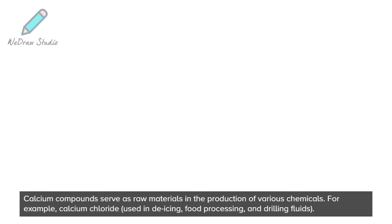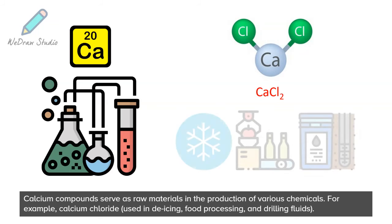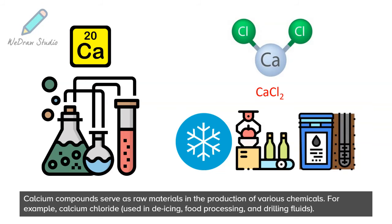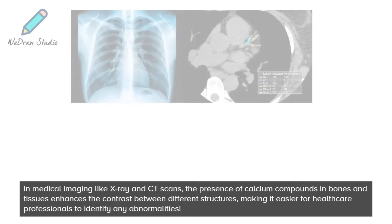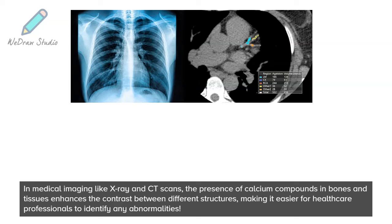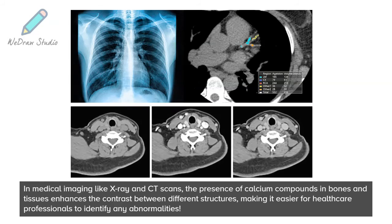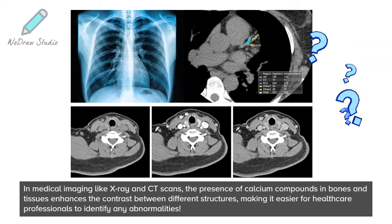Calcium compounds serve as raw materials in the production of various chemicals. For example, calcium chloride is used in de-icing, food processing, and drilling fluids. In medical imaging like X-ray and CT scans, the presence of calcium compounds in bones and tissues enhances the contrast between different structures, making it easier for healthcare professionals to identify any abnormalities.